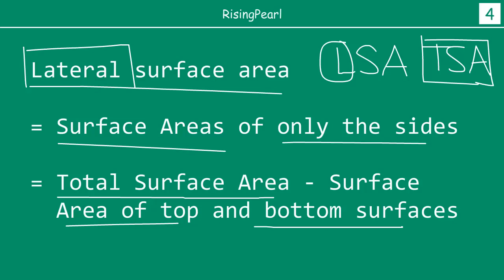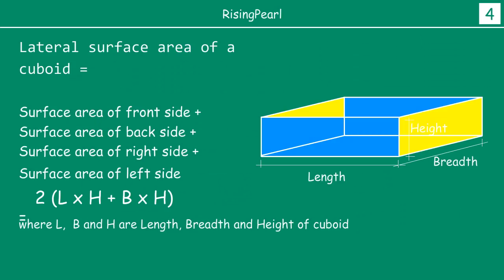Think about the room you are sitting in — if it is the shape of a cuboid, the lateral surface area means the surface area of the four walls only, not including the ceiling and the floor. So the formula for lateral surface area of a cuboid is 2 times (length times height + breadth times height).